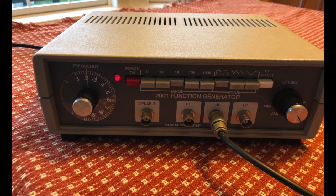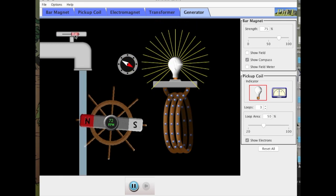This device is called a signal generator. It's an AC device that allows us to control how fast we want to spin our magnet next to the coil, just like the FET generator simulation from before.